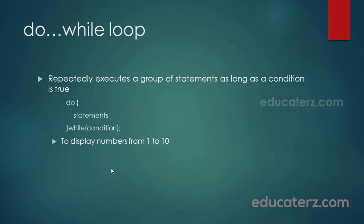Next is the do-while loop. A loop repeatedly executes a group of statements as long as the condition is true. The syntax of do-while is: do, followed by curly braces containing the statements, and then while(condition) with a semicolon. A simple example of do-while is to display numbers from 1 to 10.